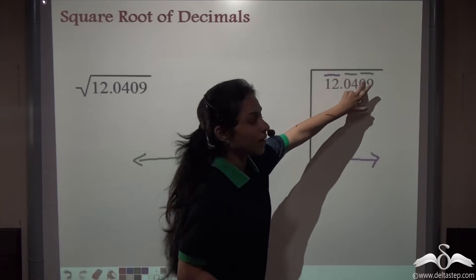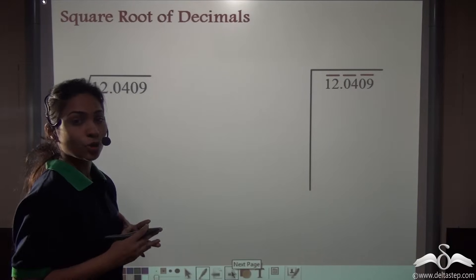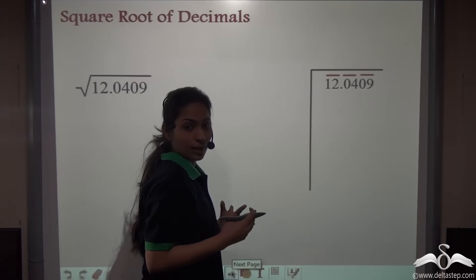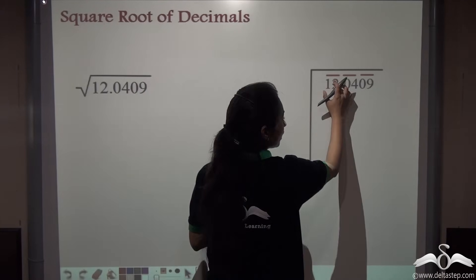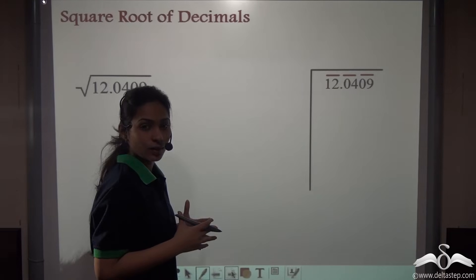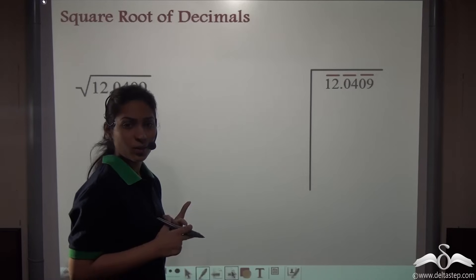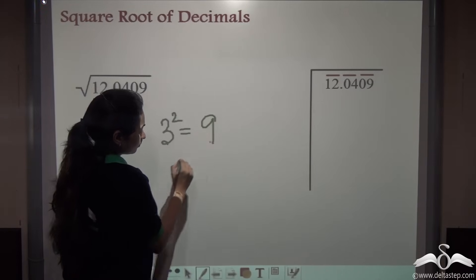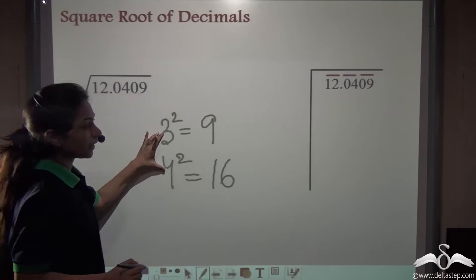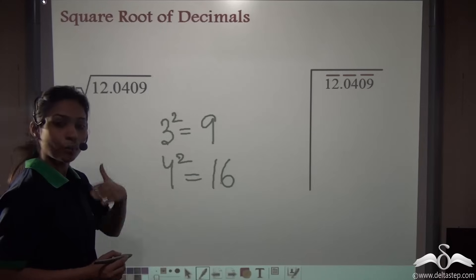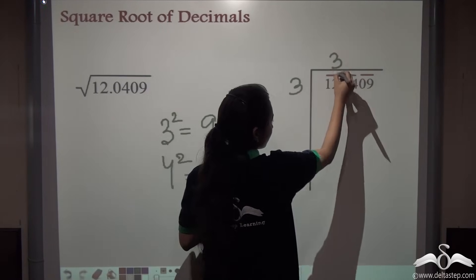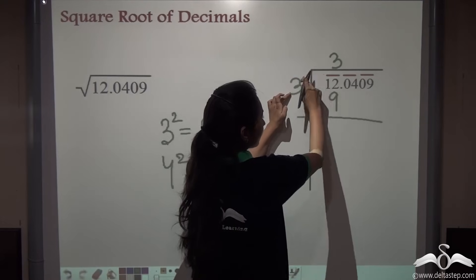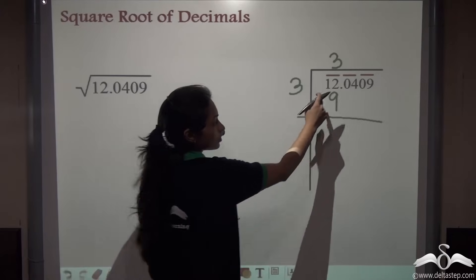So we've successfully placed the bars. Now what do you do? First step was placing the bar. Next, we take this first pair of digits. Think about a number which when squared gives a number less than or equal to twelve. Think about the squares of natural numbers. What is three squared? Nine. And what is four squared? Sixteen. So nine can be taken because sixteen will go beyond twelve. So three into three gives us nine. This quotient digit here and the divisor digit here need to be the same.